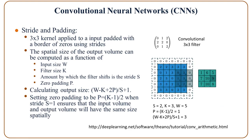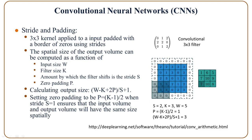Let's look at other parameters — specifically stride and padding. Given a filter or kernel, the filter size is 3 by 3, and we apply the kernel on the input image whose size is 5 by 5.